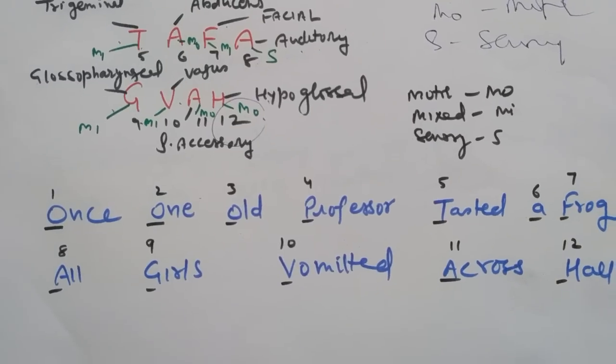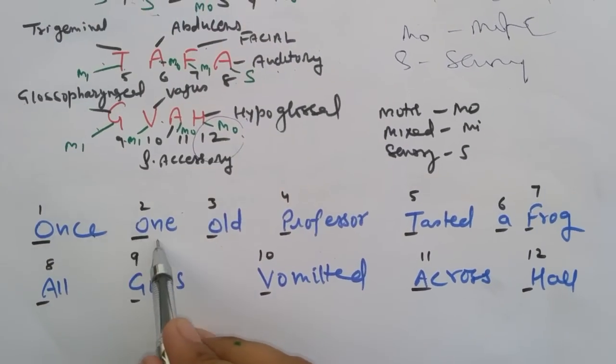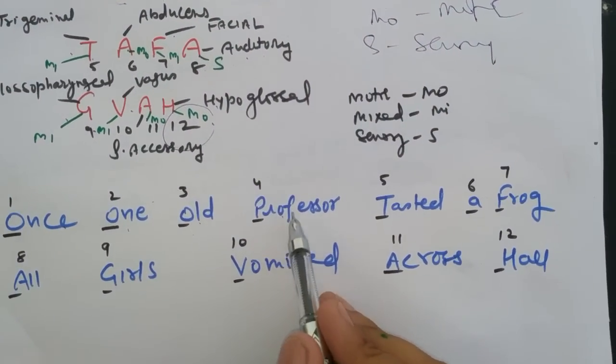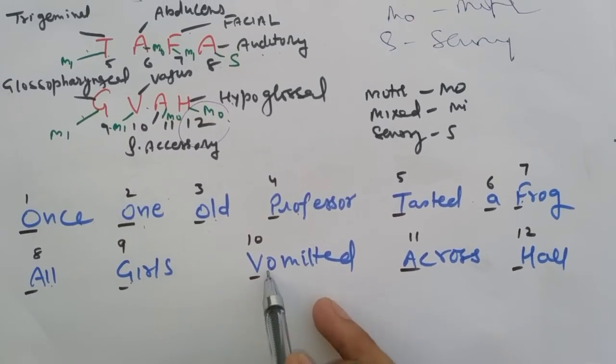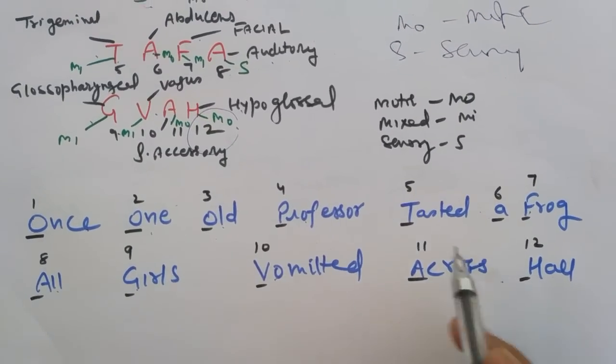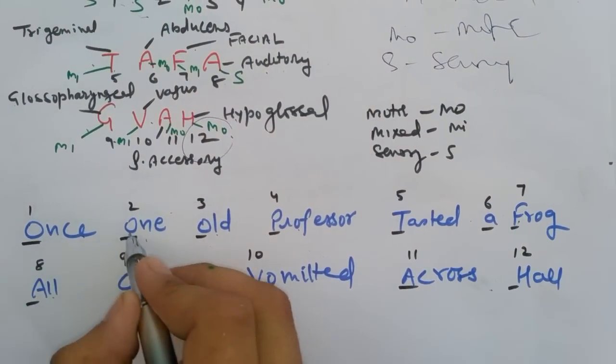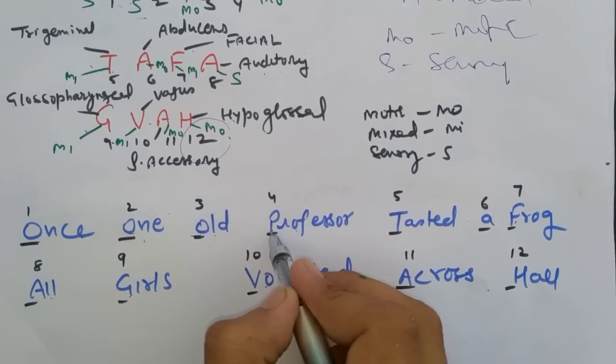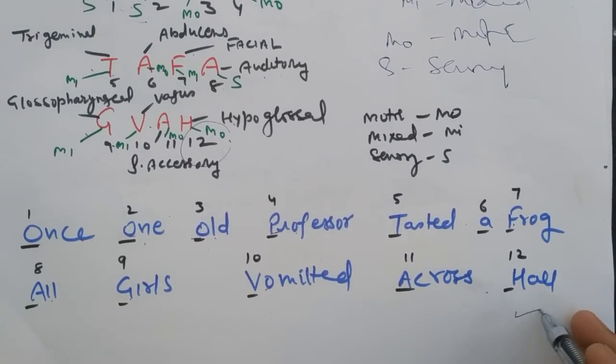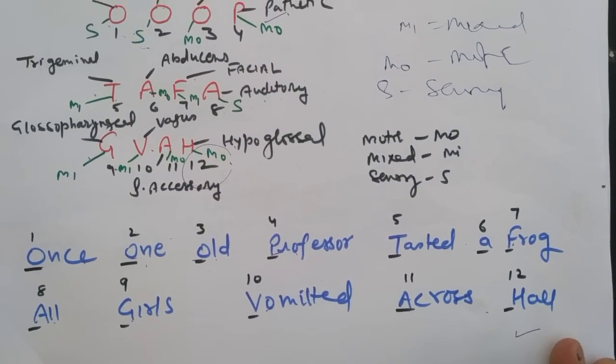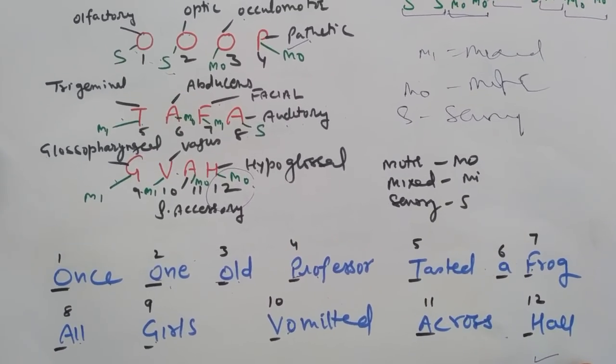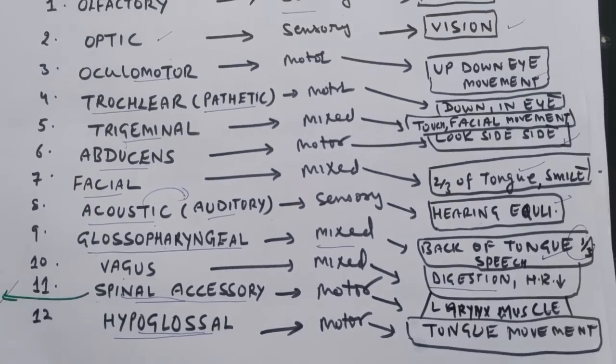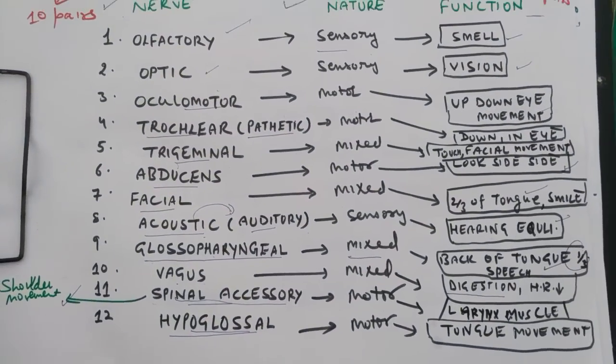There is also another sentence: Once One Old Professor Tasted A Frog, All Girls Vomited Across Hall. Here the initial letters show the name initials of the cranial nerves. I hope friend, it is helpful for you.